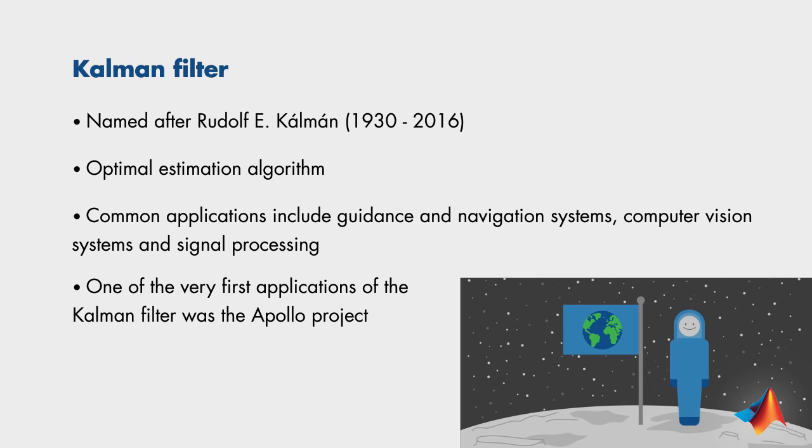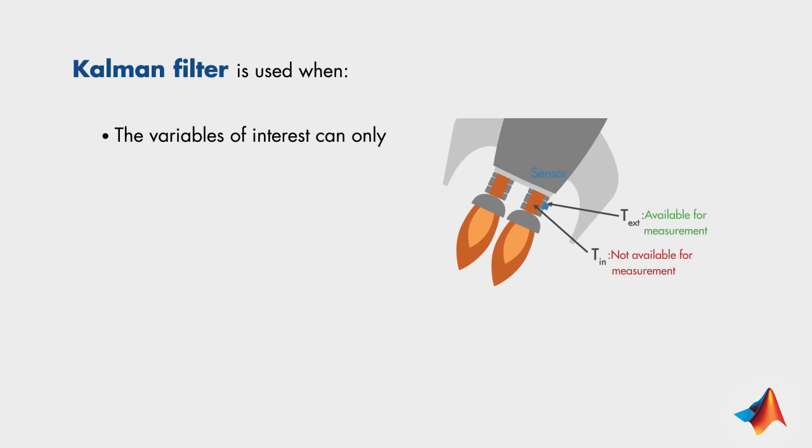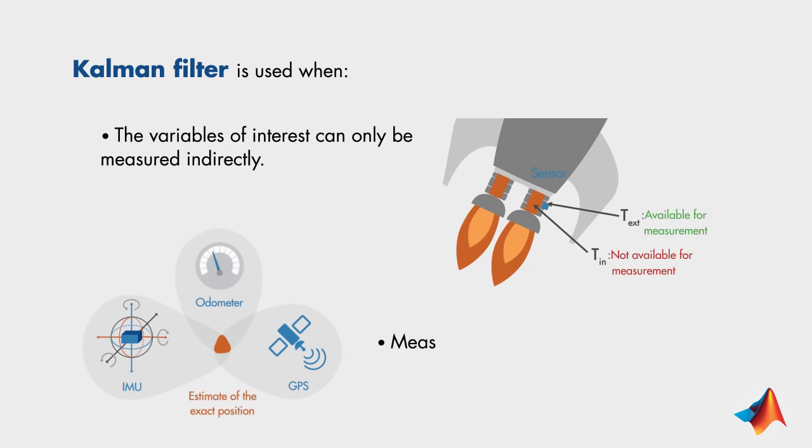Let's summarize what we've seen in this video. Kalman filters are used to optimally estimate the variables of interest when they can't be measured directly, but an indirect measurement is available. They are also used to find the best estimate of states by combining measurements from various sensors in the presence of noise.